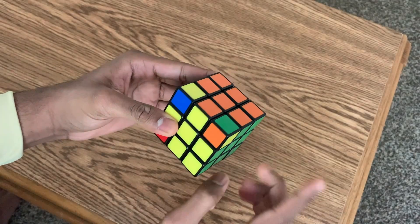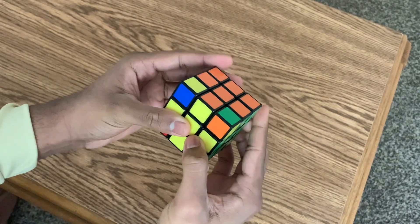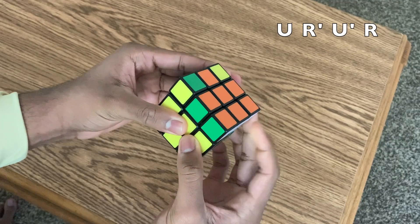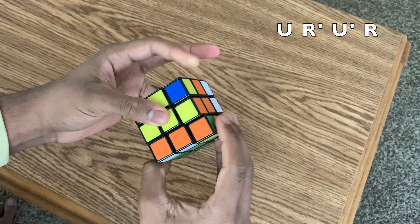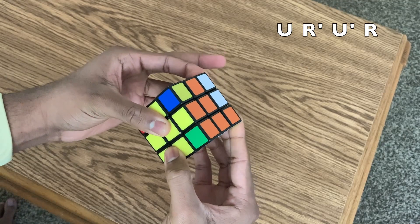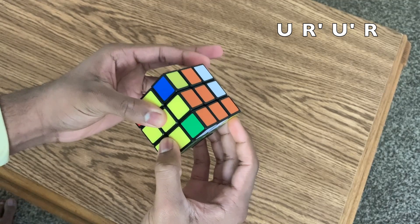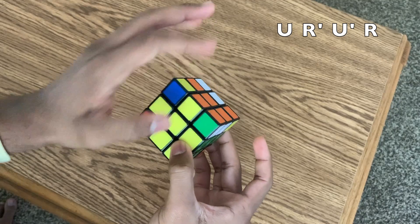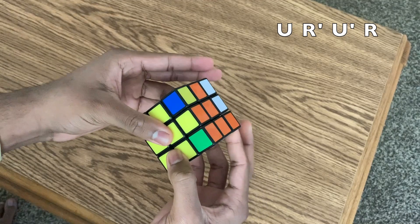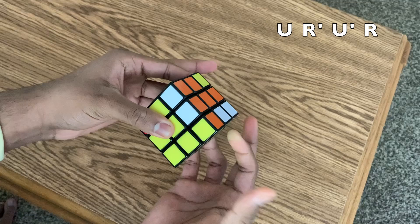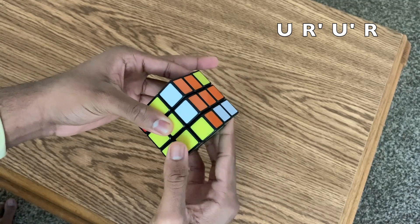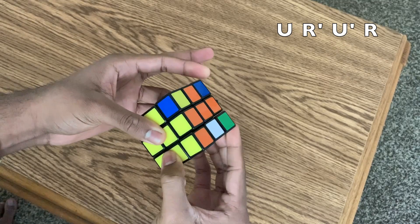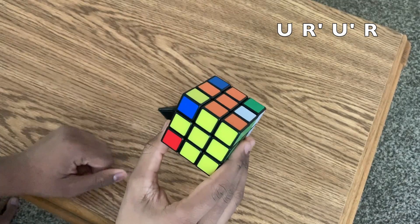Okay, and now what I'm going to do is this new algorithm. U, R apostrophe, U apostrophe, R. And I'm going to keep doing it until this yellow comes here, okay? And until this square turns yellow. It happened, but do not stop there. You want to complete the algorithm, so keep going until the algorithm is completely finished.